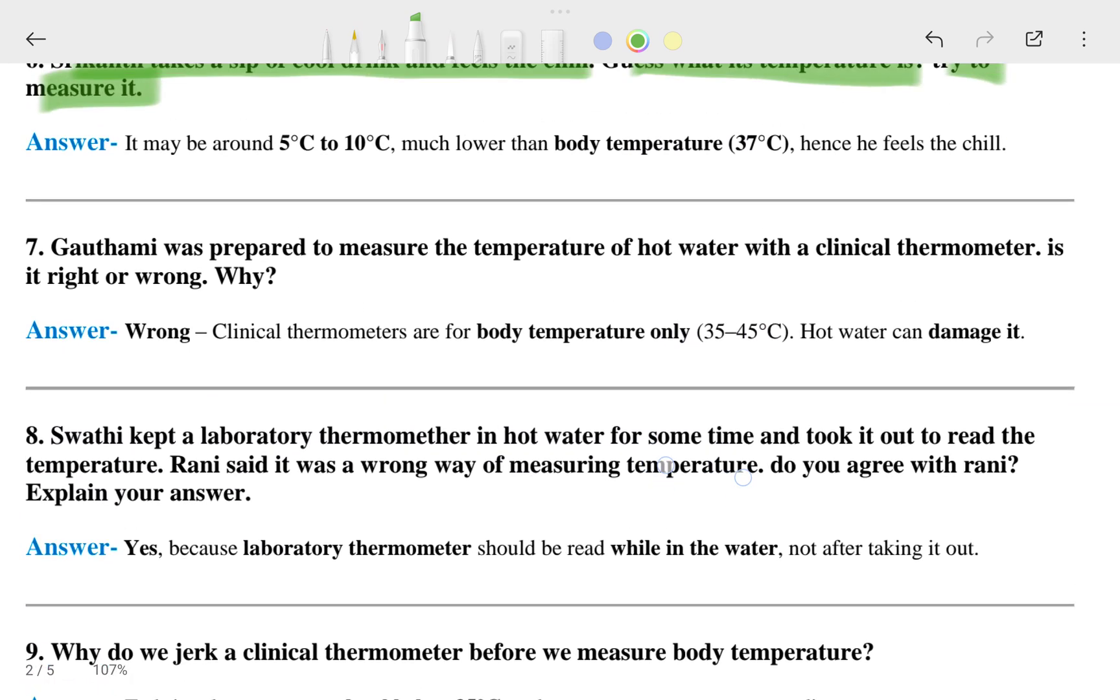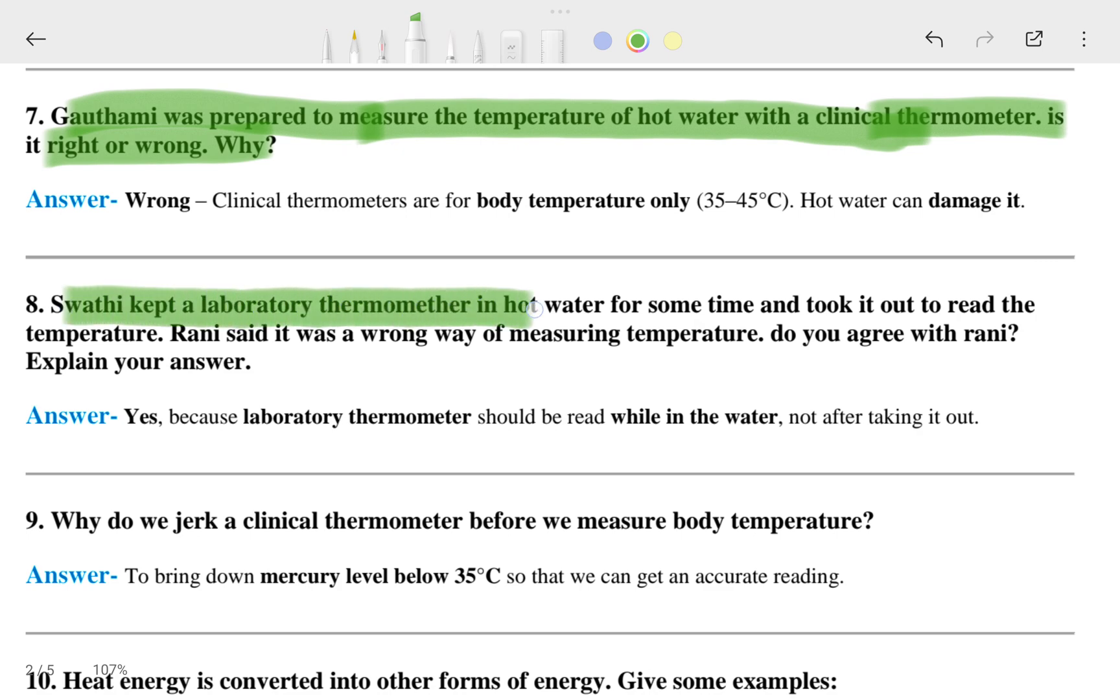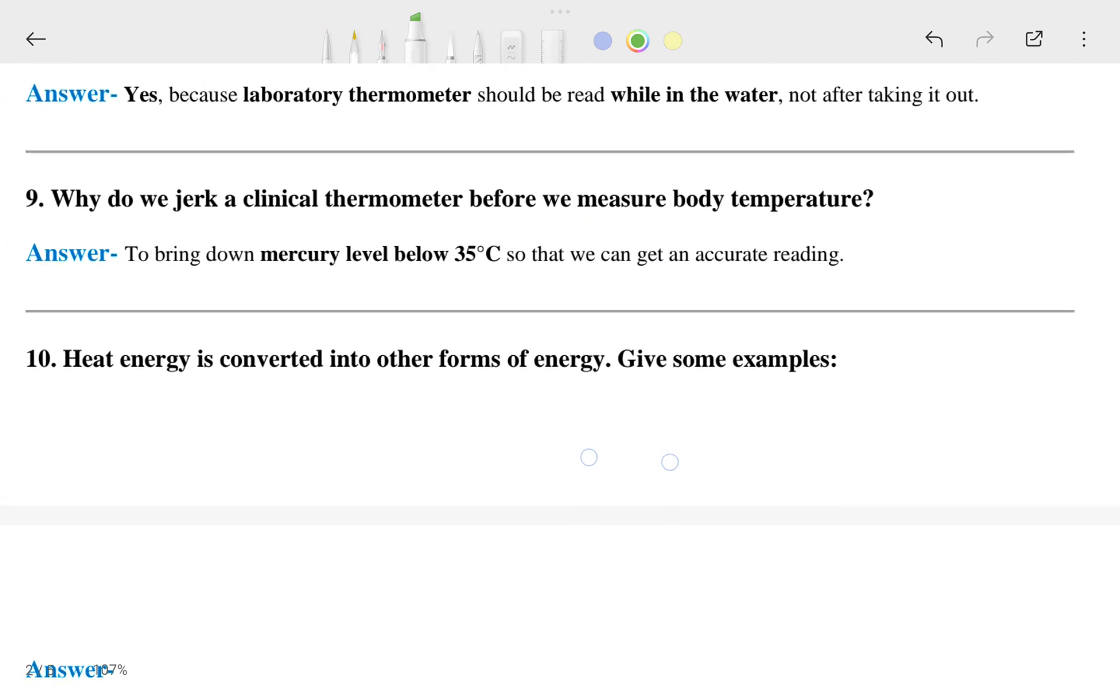Later we will go to the seventh question: Gauthami was prepared to measure the temperature of hot water with a clinical thermometer. Is it right or wrong and why? Then, Swathi kept a laboratory thermometer in hot water for some time and took it out to read the temperature. Rani said it was the wrong way of measuring temperature. Do you agree with Rani? Explain your answer.